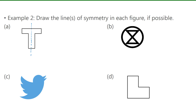For B, if I drew a vertical line down and folded it over, it would coincide with itself. Also, if I folded it down horizontally, it would coincide with itself as well — so this one has two lines of symmetry. For C, if we try to fold it in various ways, it will not match with itself, so this shape has no lines of symmetry.